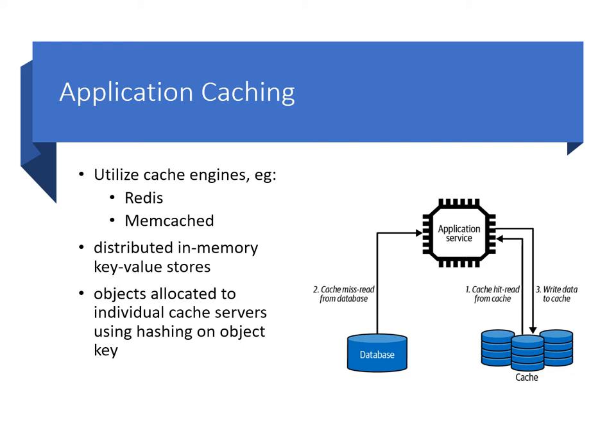Application-level caching exploits dedicated distributed cache engines. The two main technologies in this area are Memcached and Redis. Both are essentially distributed in-memory hash tables designed for arbitrary data representing the results of database queries and downstream service API calls. The service first checks in the cache to see if the data it requires is available. If so, it returns the cached contents as the results to the request — this is known as a cache hit. If the data is not available in the cache, a cache miss, the service retrieves the requested data from the database, writes the query results to the cache so it's available for future clients, and returns the request results to the requester.